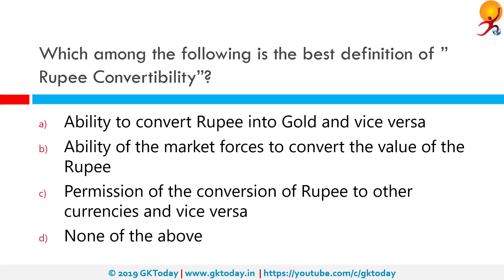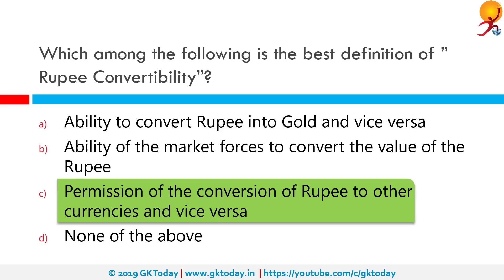Which among the following is the best definition of rupee convertibility? The correct answer is permission of the conversion of rupee to other currencies and vice versa. Convertibility of rupee means that those who have foreign exchange like US dollars, pounds sterling, etc., can get them converted into rupees and vice versa at the market determined rate of exchange. Rupee is both convertible on capital account and current account.